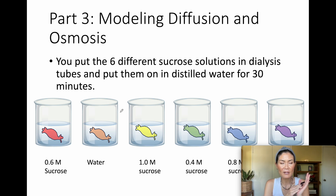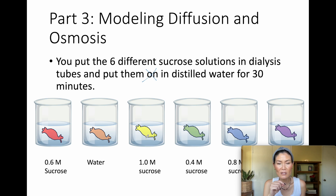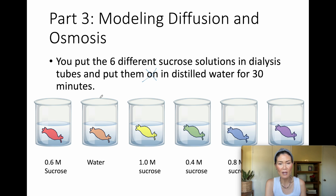Part three, the last part of the lab, was modeling diffusion and osmosis. You put six different sucrose solutions in dialysis tubes and placed them in distilled water for 30 minutes. The red dialysis tube contained 0.6 molar sucrose, orange was pure water, yellow was 1.0 molar, green was 0.4, blue was 0.8, and purple was 0.2. All of those dialysis bags were then placed in cups of water.